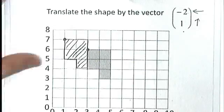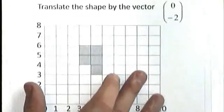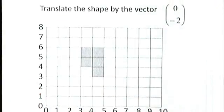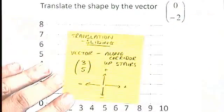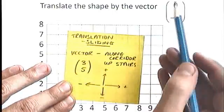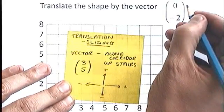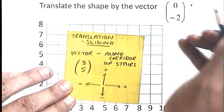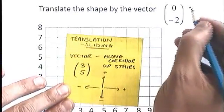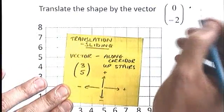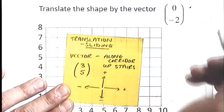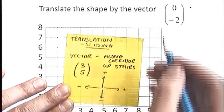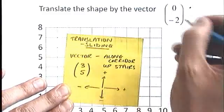The last one we can have a look at very quickly is this one here. Translate the shape by the vector zero minus two. Once again, take a look at the sticky notes. Along the corridor, the top number is along the corridor. We are going zero along. So in fact, I'm not going to put an arrow there. I'm just going to put a little dot. I'm staying where I am. I'm not going along the corridor at all. Zero means no motion left or right. And a minus two here, well, minus is down the stairs.